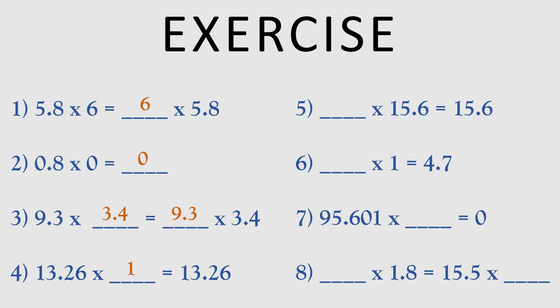Question number 5: Dash x 15.6 is equal to 15.6. If 1 is multiplied by any decimal number, the answer is the number itself. So the answer is 1. Question number 6: Dash x 1 is equal to 4.7. Any decimal number multiplied by 1, the answer is the number itself. So the answer is 4.7. Question number 7: 95.601 x dash is equal to 0. The answer is 0.